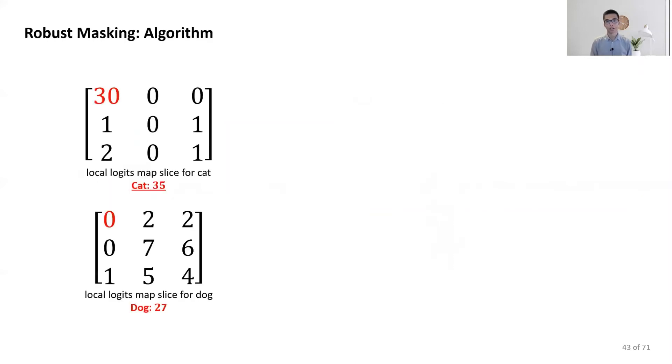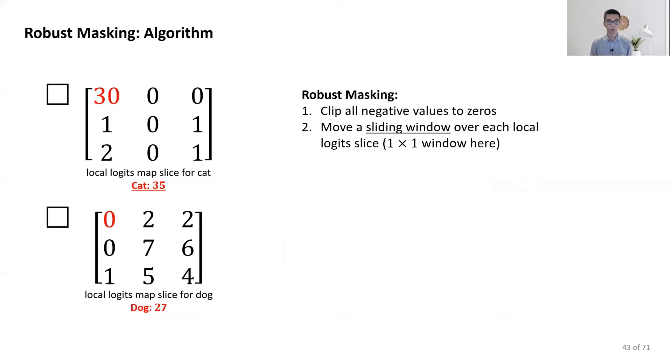Now, let's talk about the algorithm. We know a small patch will corrupt a small window of the local logits and potentially with large values. Then we want to detect and remove them. The first step, we clip all negative values to zero. We will see later why this is helpful. The core operation is to move a sliding window over each local logits slice. The size of window is determined by the number of corrupt features. Here, we use a one-by-one window.